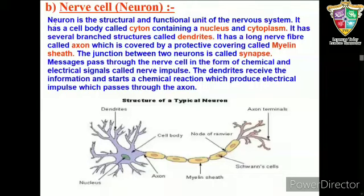Nervous tissue contains highly specialized unit cells called nerve cells or neurons. Neurons are the longest cells of the body, reaching up to a meter in length. Neurons have the ability to receive stimuli from within or outside the body and conduct impulses to different parts of the body.